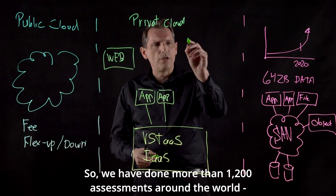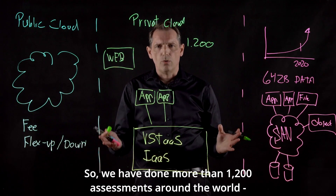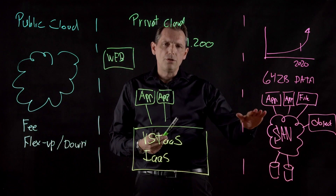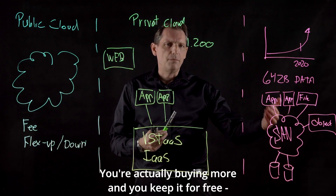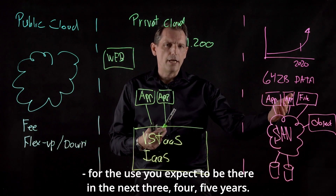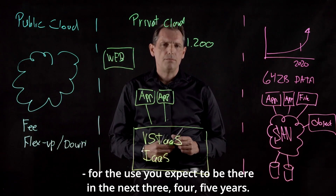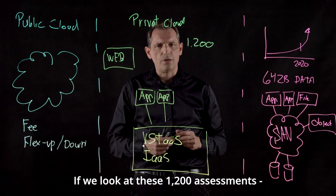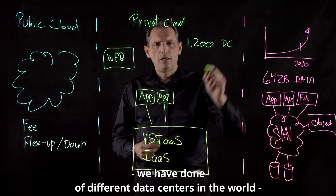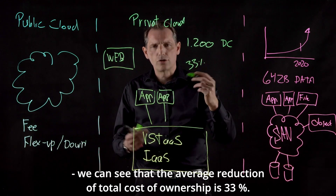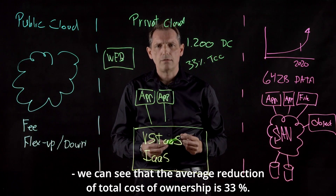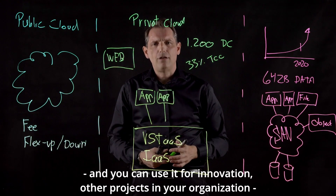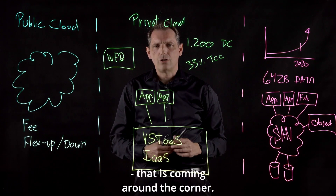We have done more than 1,200 assessments of enterprise data centers around the world, and what we have learned is that the utilization rate in traditional infrastructure is not that high. You're buying more capacity and keeping it in reserve for the usage you expect over the next three, four, or five years. By shifting into private cloud, you save money. Across these 1,200 assessments, the average reduction in total cost of ownership is 33%. That freed-up capital can be used for innovation and other projects, helping you deal with all the data growth that is coming.